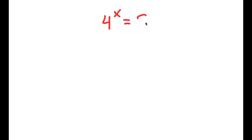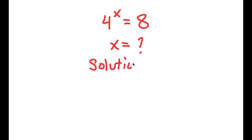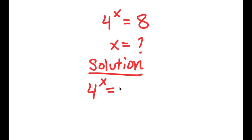In this problem, I have 4 to the power of x is equal to 8, and I want to find the value of x. For my solution, I'll start by rewriting the problem: 4 to the power of x is equal to 8.